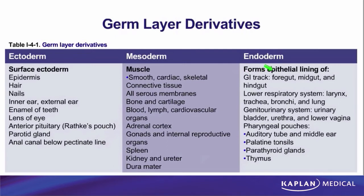The other point concerns this phrase 'epithelial lining.' On the endoderm column you see structures like the GI tract and respiratory system, but notice it says the epithelial lining of those organs. The point is that endoderm only gives rise to epithelial cells. It's not correct to say the endoderm gives us the GI tract — it's correct to say the endoderm gives us the epithelial lining of the GI tract. The smooth muscle and connective tissue of the GI tract come from mesoderm, because endoderm only gives us epithelial cells.